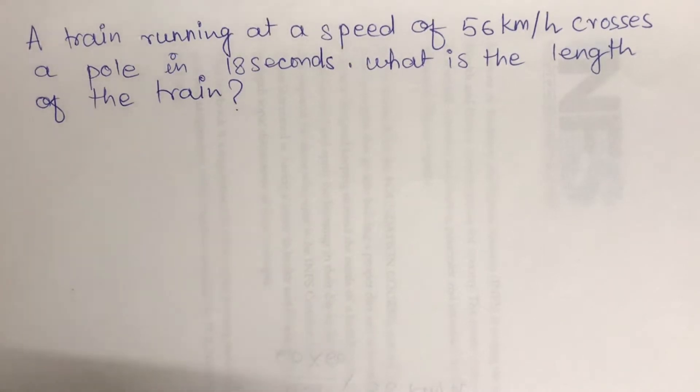The question is: a train running at a speed of 56 kilometers per hour crosses a pole in 18 seconds. What is the length of the train?